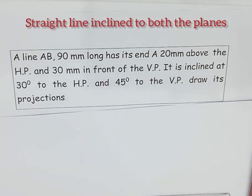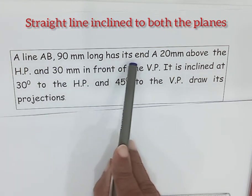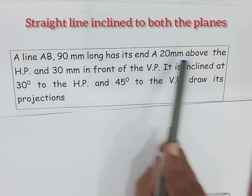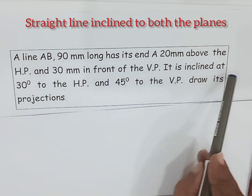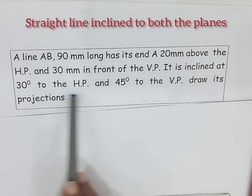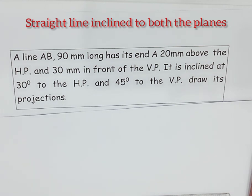Welcome to the discussion of line inclined to both the planes. Today we will discuss the basic problem of line inclined to both the planes. A line AB 90mm long has its end A 20mm above the HP and 30mm in front of the VP. It is inclined at 30 degrees to the HP and 45 degrees to the VP. Draw its projections.